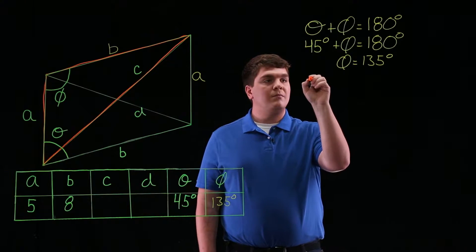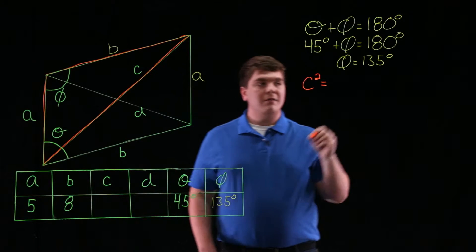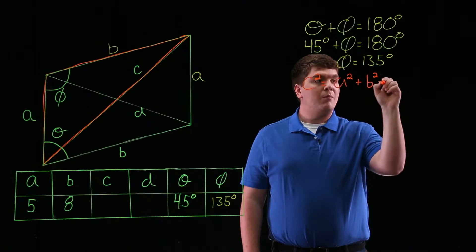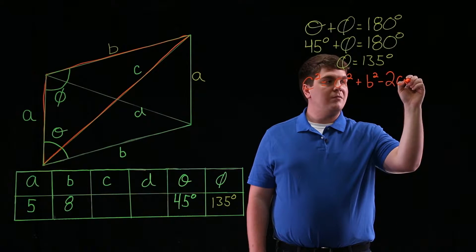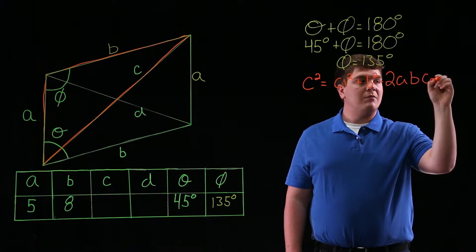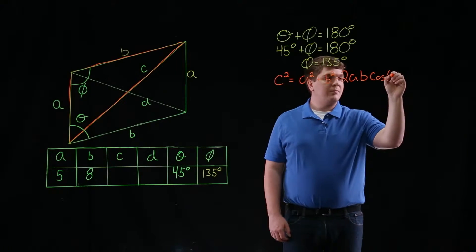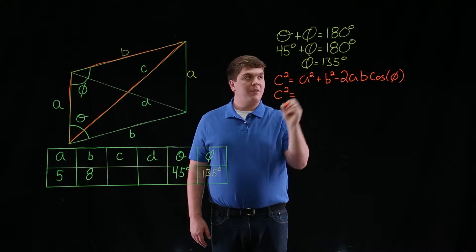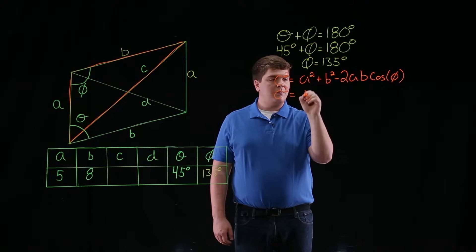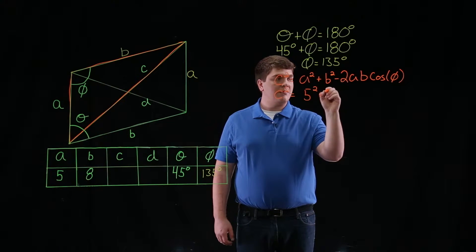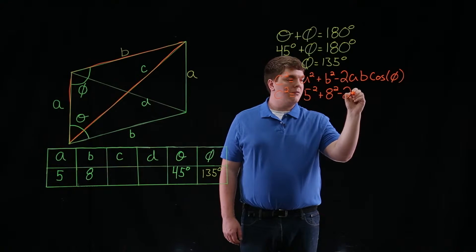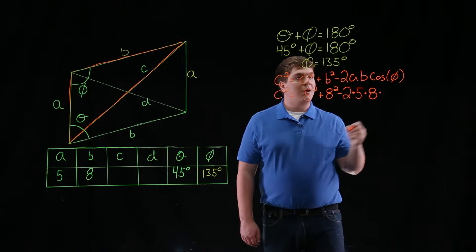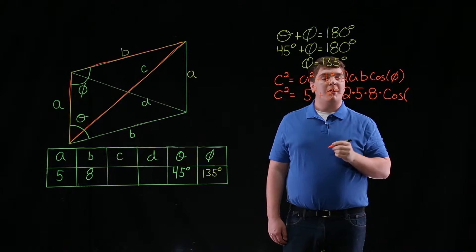Here we can use the law of cosines, which tells us that C squared is equal to A squared, plus B squared, minus 2 times A times B, times the cosine of phi. Now substituting the values in, we have C squared is equal to 5 squared, plus 8 squared, minus 2 times 5 times 8, times the cosine of phi.